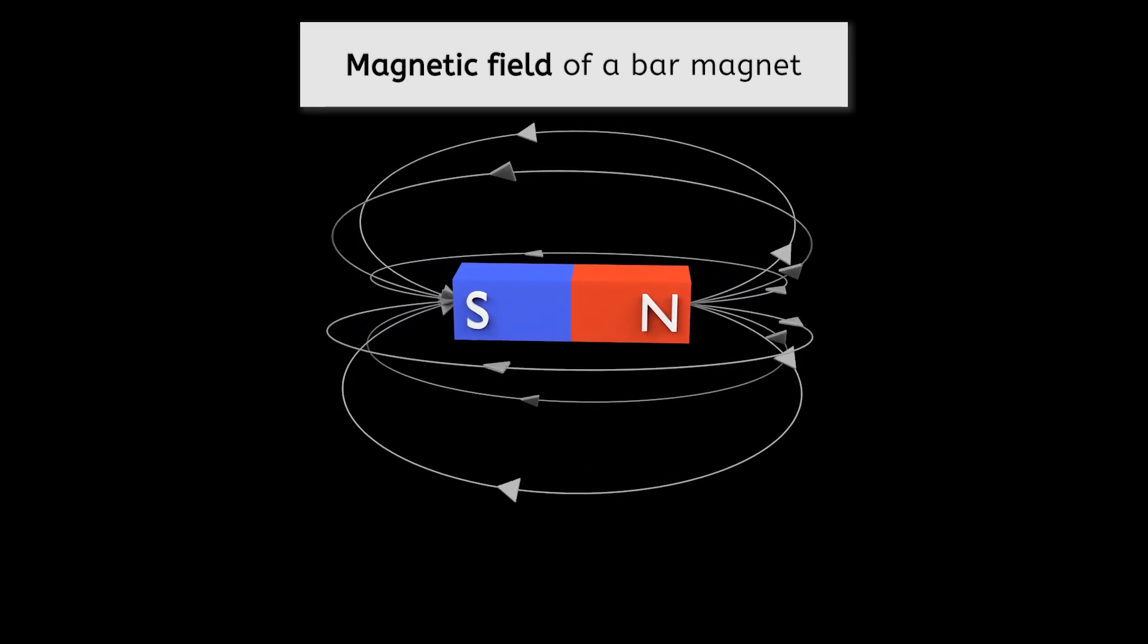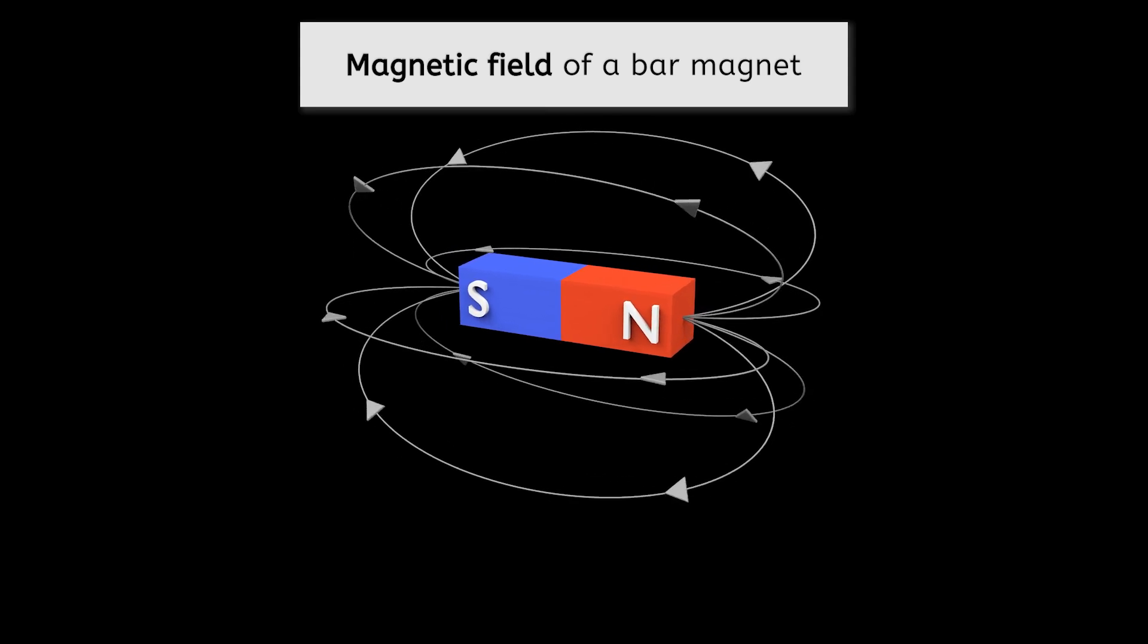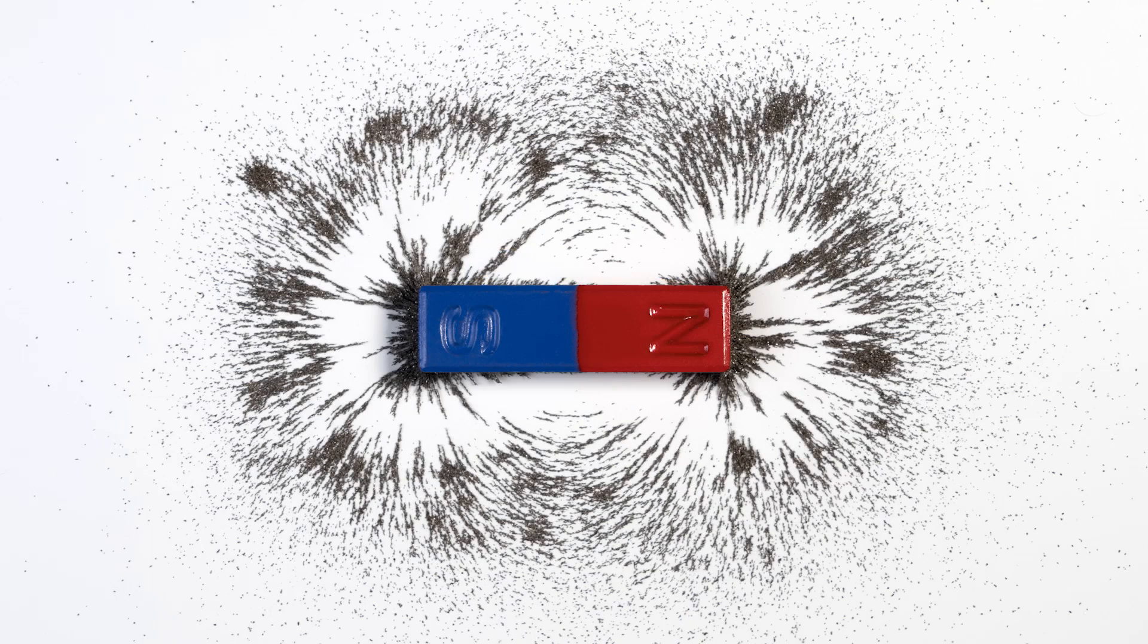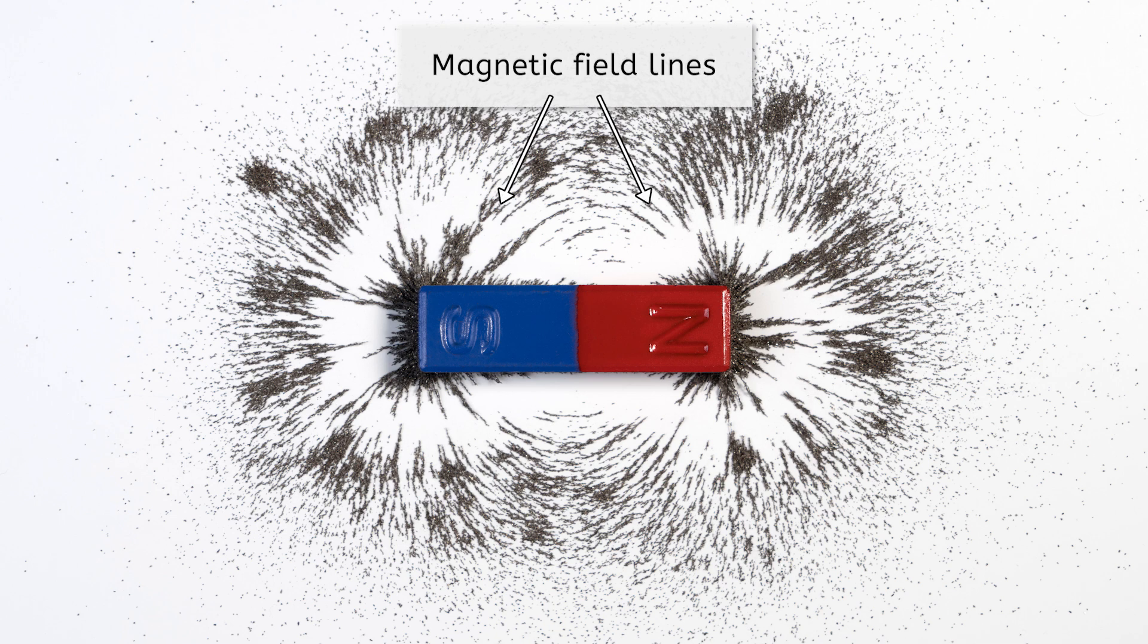Imagine the magnetic field as a region around the magnet where its influence or force can be felt. To visualize this field, iron filings can be sprinkled around a magnet. The iron filings align themselves along the magnetic field lines, creating a pattern that reveals the shape and direction of the field.